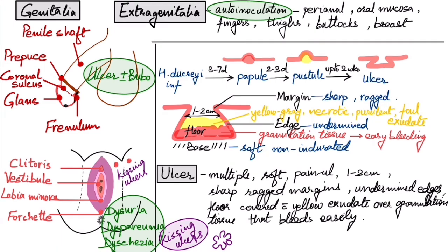Sometimes they ask the triad of the chancroid ulcer. The first is the pain associated with the ulcer - severe painful ulcer. The second is the undermined edges of the ulcer. And the third one is the yellow-gray dirty exudate on the floor. So this is a triad.